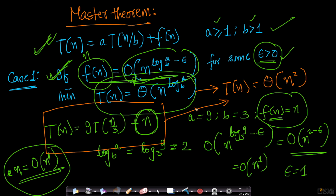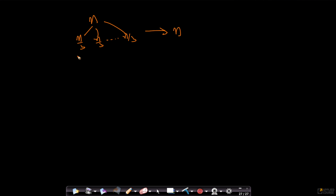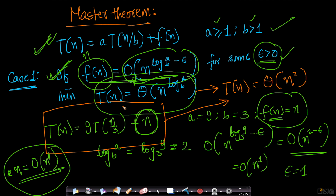See how easy this is — I haven't drawn anything. If I were to draw the recursion tree, I'd have to break this down into 9 subproblems of size n/3, each costing O(n), repeating further. Applying master theorem Case 1 is much more straightforward.